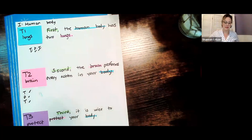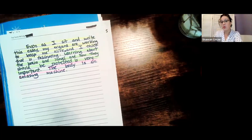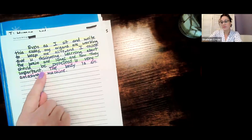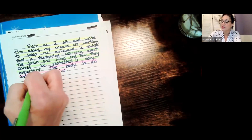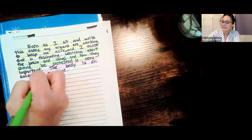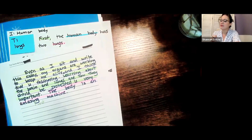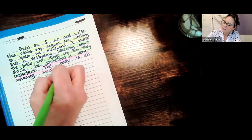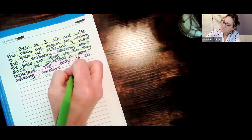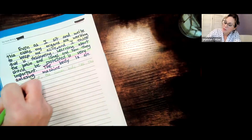First, the human body has two lungs. So when I look at my essay, if I'm going to write my whole essay, this is my I paragraph. And then when I want to come write my next paragraph, remember, we're always going to indent. So I'm going to copy that sentence — first, the human body has two lungs. Now, that's my topic sentence.